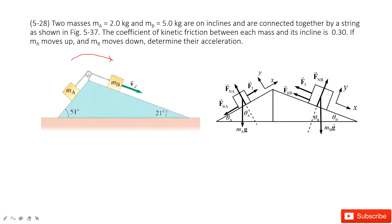So we can do force analysis for this system. And because the motion is in this direction, the friction for B is in the opposite direction. The friction for A is in the opposite direction.